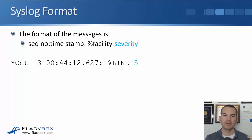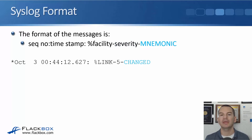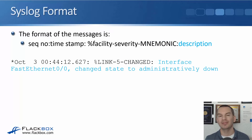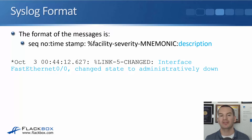In our example the severity level of this event is severity five. The next thing is a mnemonic, which is a short description of what happened — here we can see that a link has changed. Then the last thing in the syslog message is a more detailed description. In our example the description is: the interface FastEthernet0/0 changed its state to administratively down, meaning somebody typed 'shutdown' on that interface.